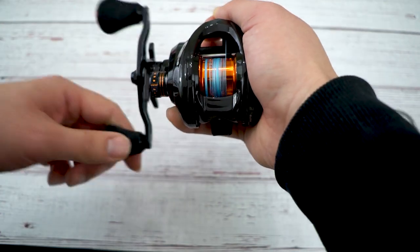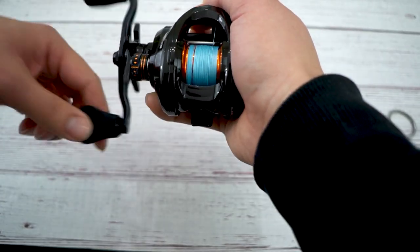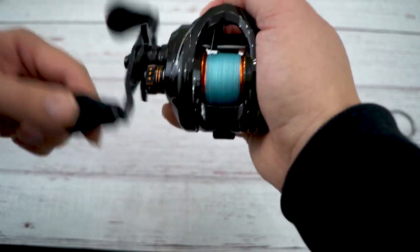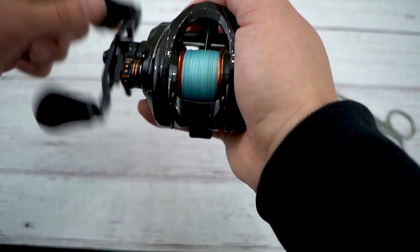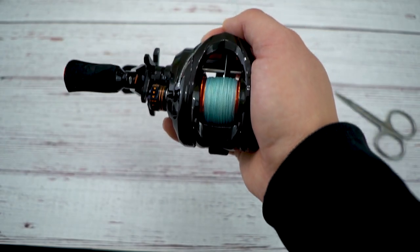There you go. That's how you spool up your BFS reel with braided line directly onto the spool. Hope you guys enjoyed this tip. If so, smash that like button and subscribe for more tips. The fish don't wait. Get your stuff cranked up, ready to go and go catch some fish.